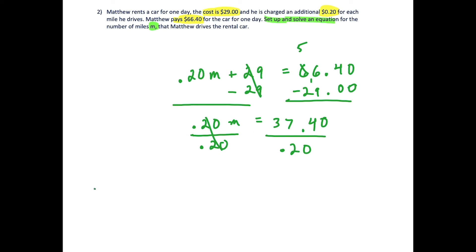To solve for M, divide both sides by 0.20. You could use a calculator, or we can do long division. Convert the decimals to whole numbers by multiplying top and bottom by 100, which moves the decimal two places.